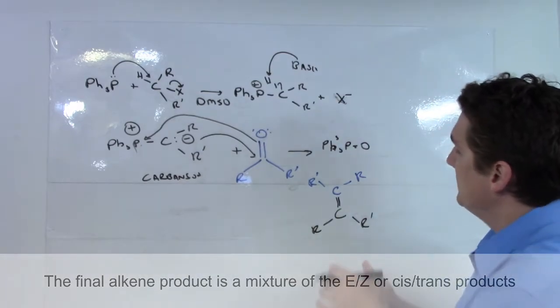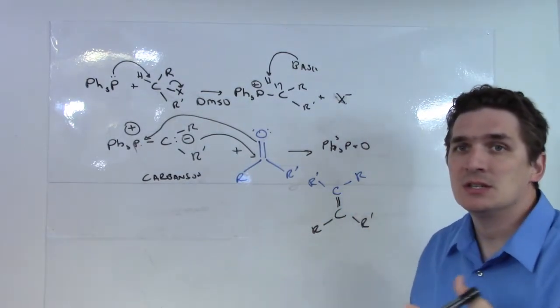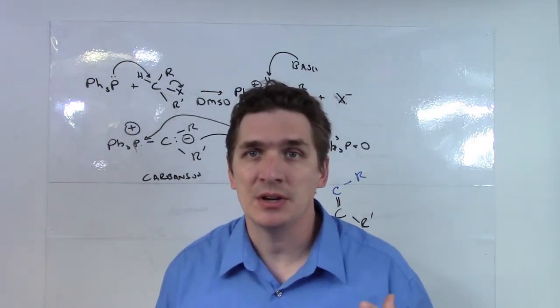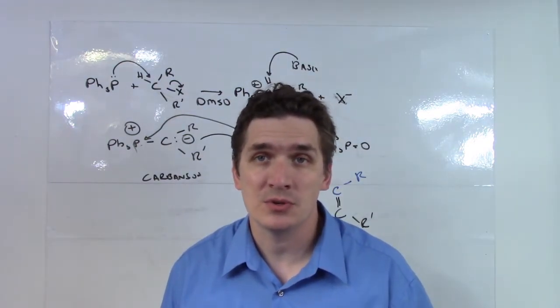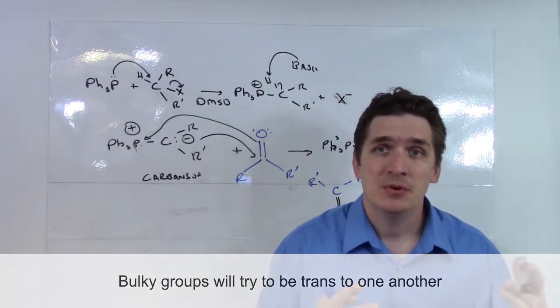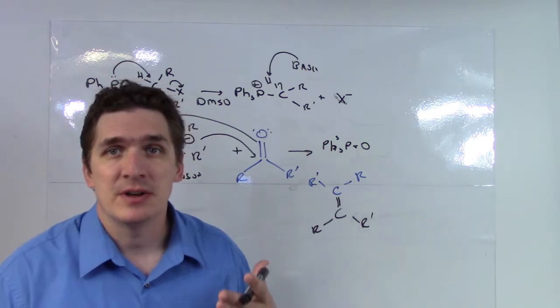Now, what do I mean by mixtures? These R and R prime groups may be cis or trans to one another. We will actually get a mixture of both. Now, there is some steric guidance that will force it, but basically, we will end up with an equal mixture of both the cis and the trans versions of the final products.